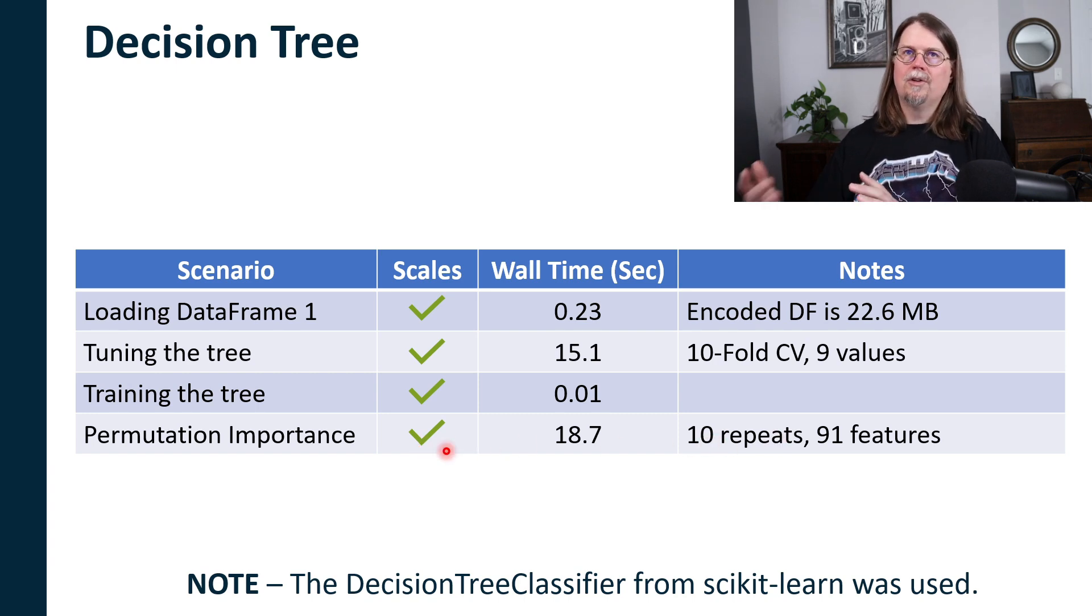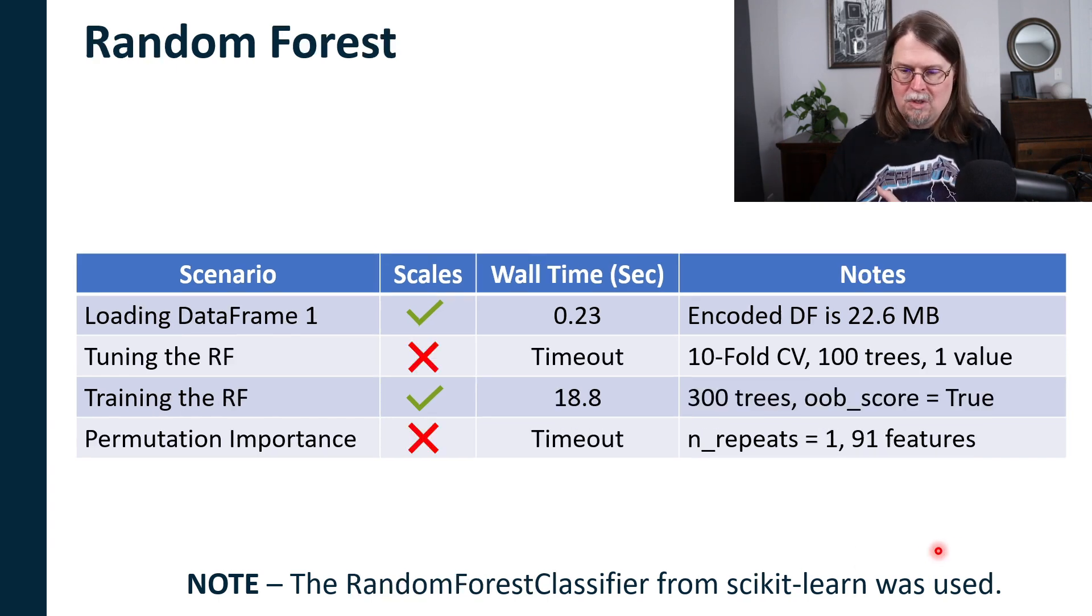And generally speaking, you could, if you needed to, you could lower the repeats. If your data frame got bigger and bigger and bigger, that's okay. It's not great. It's not ideal, but you could do it. So this scales pretty well. So, so far, everything's looking pretty good for decision trees. Now, not surprisingly, when we move into random forests, we get a different outcome. So let's take a look at that. So here we go. Here's the stuff for random forests. Now, I'm using the random forest classifier from scikit-learn. I used the decision tree classifier from scikit-learn in the previous slide. And notice what we've got going on. It's the same data frame because notice it gets encoded to 22.6 megabytes, as we saw before.